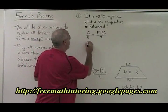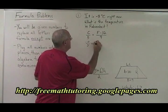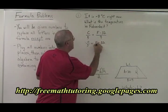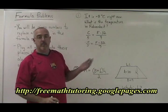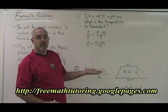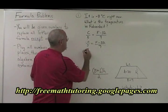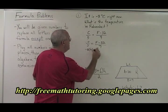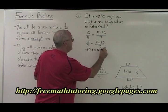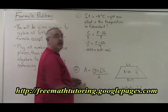So we write negative 8 over 5 equals F minus 32 over 9. It's a proportion, top times bottom equals bottom times top. Negative 8 times 9 equals 5 times F minus 32. Now we simplify.